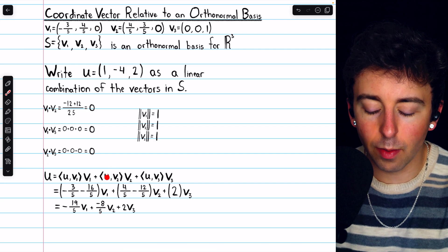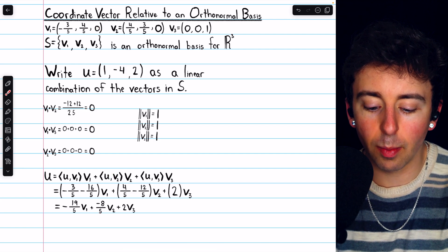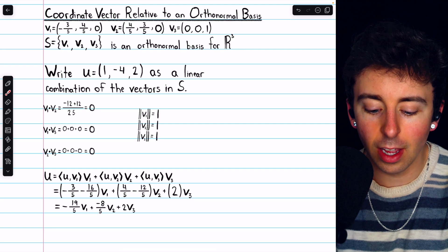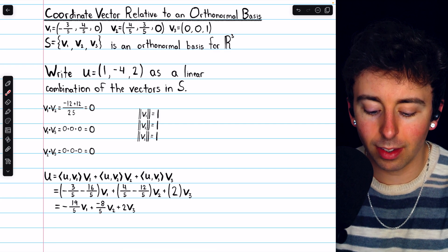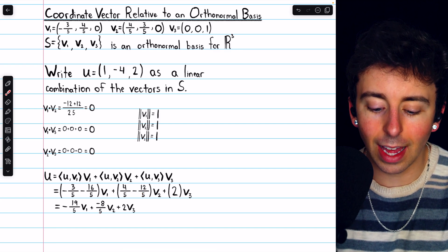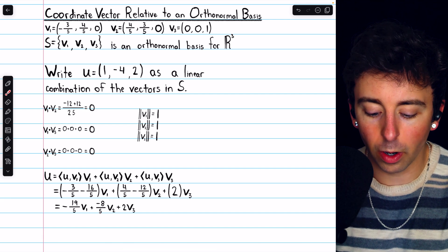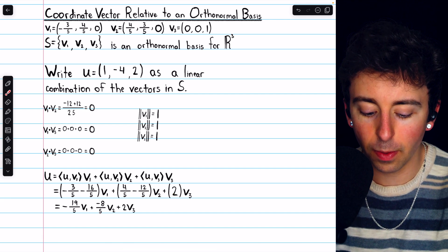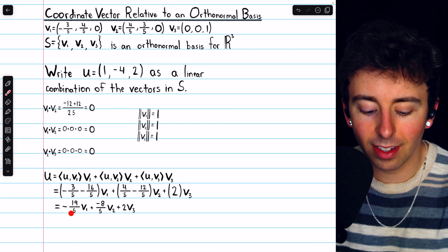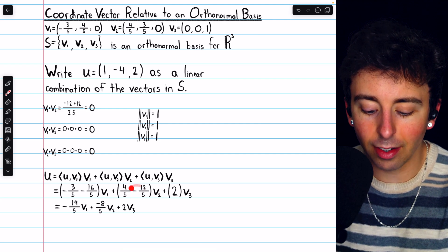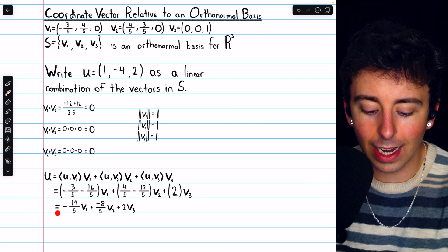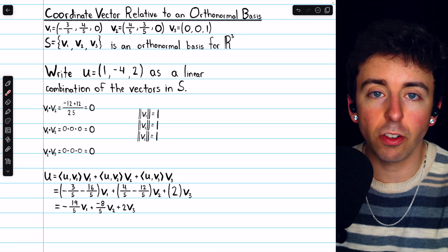For u dot v2, we would have 1 times four-fifths, so four-fifths, minus 4 times three-fifths, so minus 12-fifths, and the last term is 0. For u dot v3, we would just get 2. Negative three-fifths minus 16-fifths is negative 19-fifths, and so on. Just do the arithmetic, and this is our linear combination.